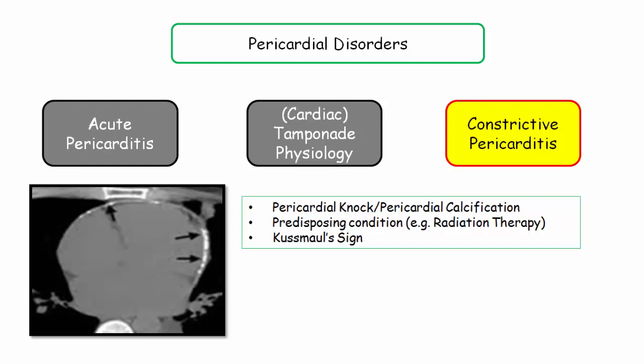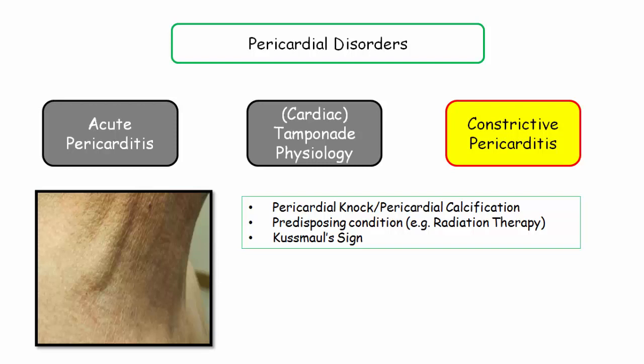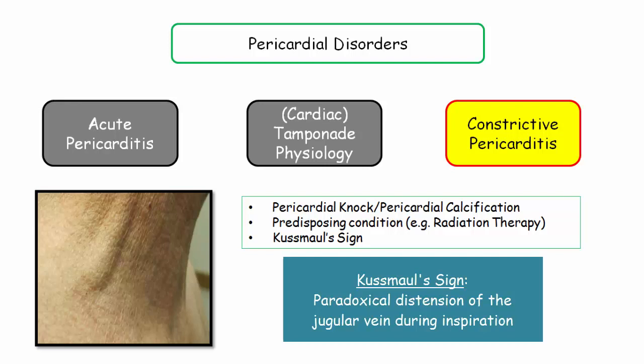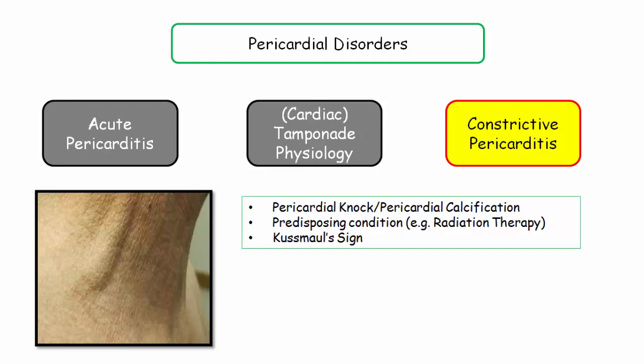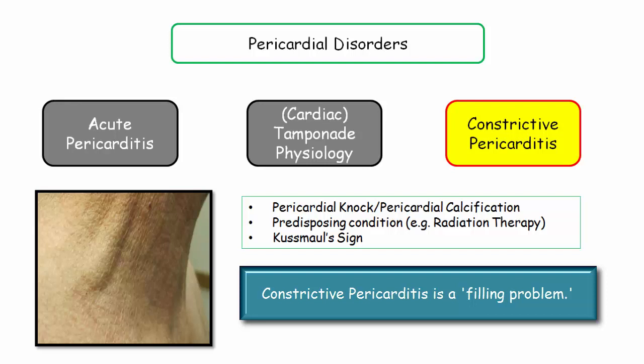Vignettes will also include a predisposing condition associated with constriction. In the majority, that condition seems to be radiation therapy of the chest that occurred 30 years earlier. And finally, the patient will be described with Kussmaul sign, which is the paradoxical distension of the jugular venous pressure during inspiration. This is a big deal, as it reflects the underlying pathophysiologic problem — blood cannot return to the heart. Constrictive pericarditis represents a cardiac filling problem, and this is very nicely reflected by Kussmaul sign.